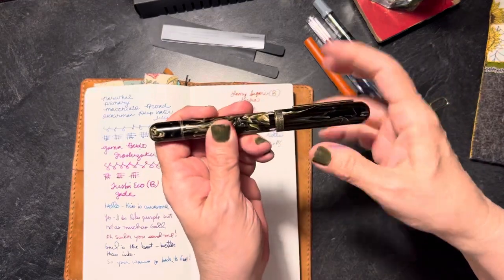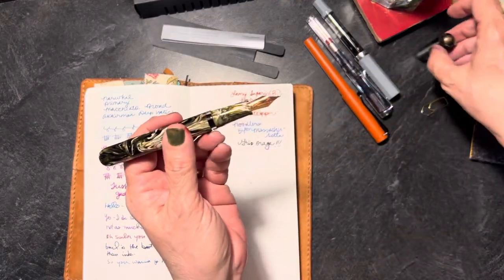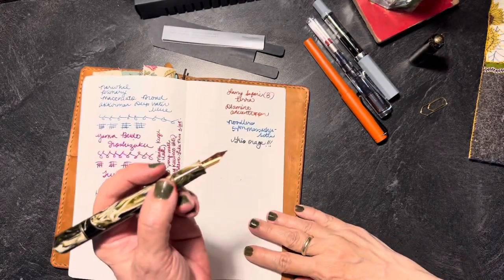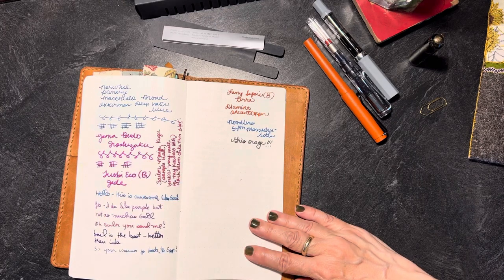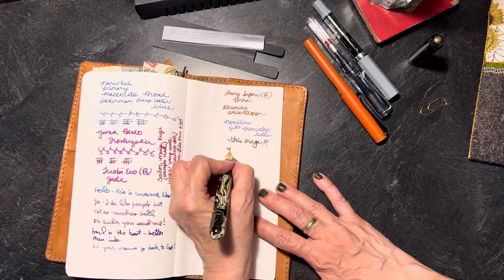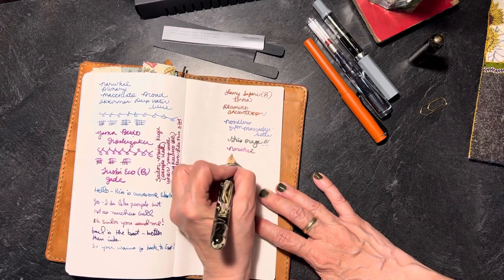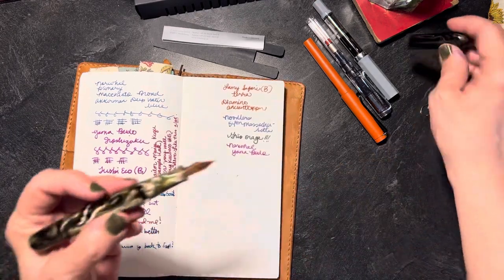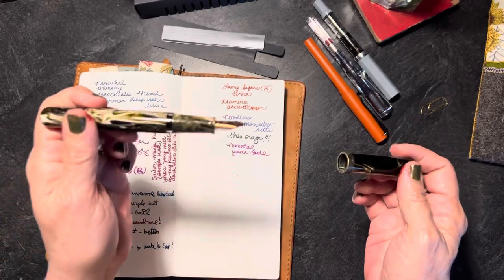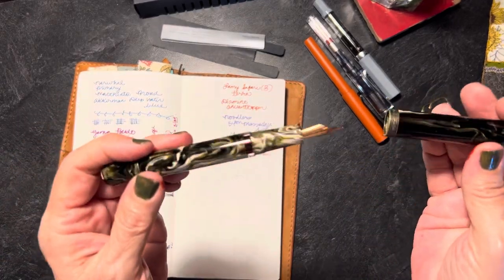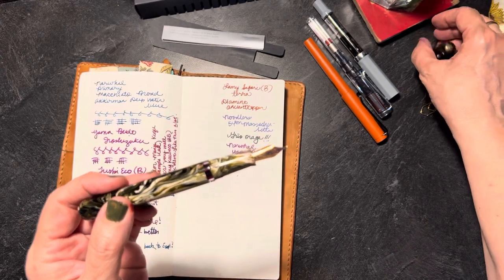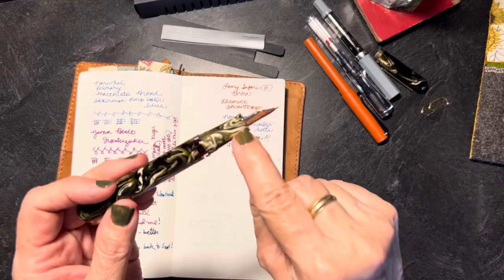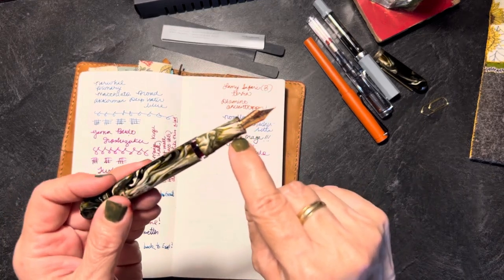And then I did switch this out this week. I put in my Narwhal Macchiato, primary Macchiato, the Orochizuku Yamabudo, I think. Is that the right name? Yeah. So this is a nice combination too. I have been very happy with my Orochizuku inks and I love this other impulse by my Narwhal.